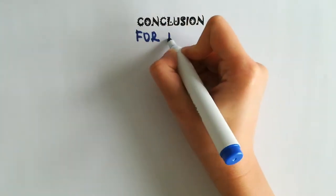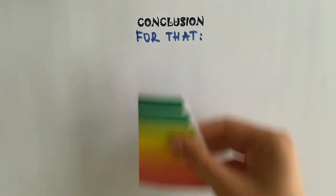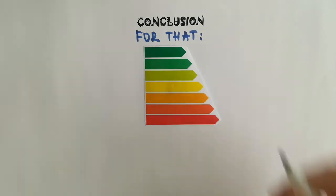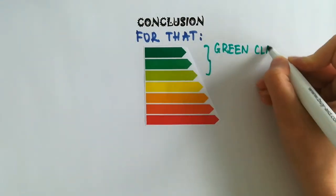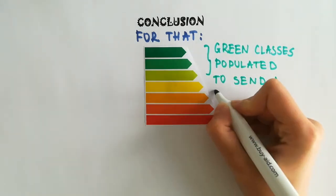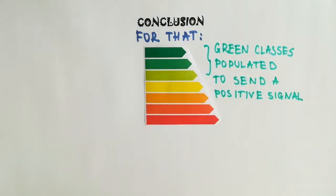For that, we believe it is crucial that the next eco-design and energy labeling regulation follows two key principles. First, the green classes of the future label should be populated. This will send a positive signal to consumers. Seeing a product in the orange or red part of the scale will not convince people that they are making an environmentally friendly choice when buying a new appliance.